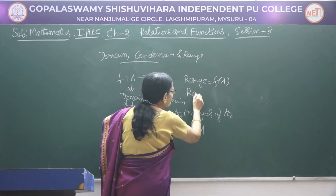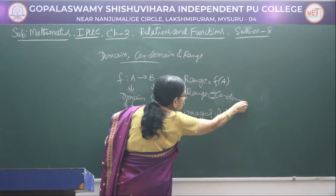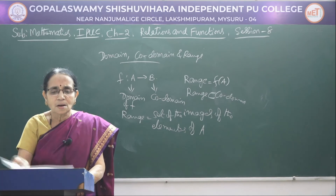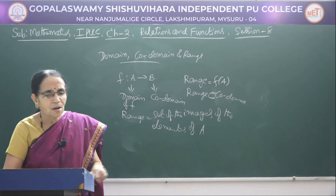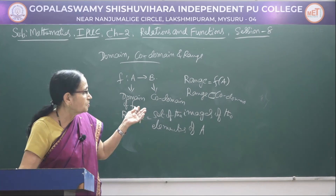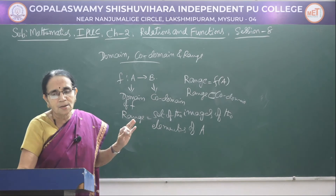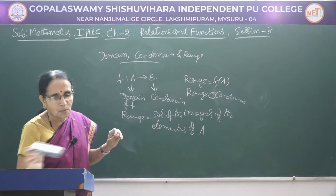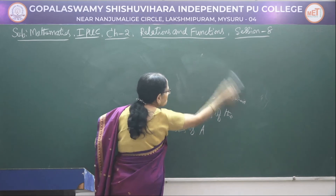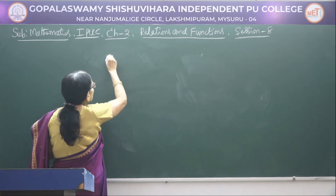Range would always be a subset of co-domain. Sometimes depending upon how the function is defined, the range may be equal to co-domain. But generally we can say range is a subset of the co-domain. Let me take an example so that you will clearly understand the definitions of domain, range, and co-domain.